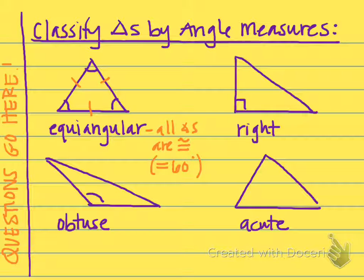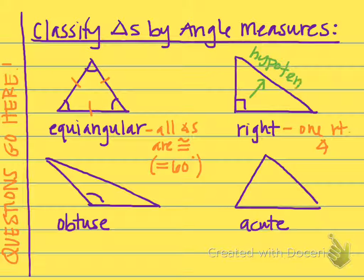Next we have a right triangle, which is a triangle that has one right angle. It's actually impossible to have two right angles in a triangle because two right angles already add up to 180, which means the third angle would have to be zero degrees — which isn't going to be an angle. So there can only be one right angle in a triangle. The long side across from the right angle is called the hypotenuse, and the other two sides on either side of the right angle are called the legs.